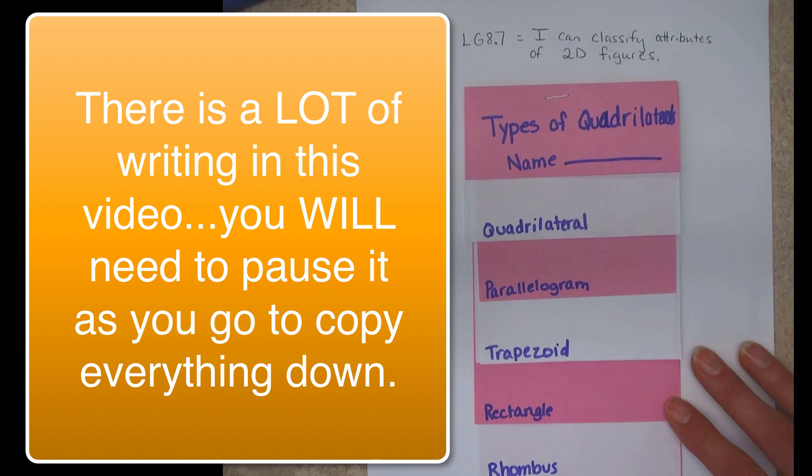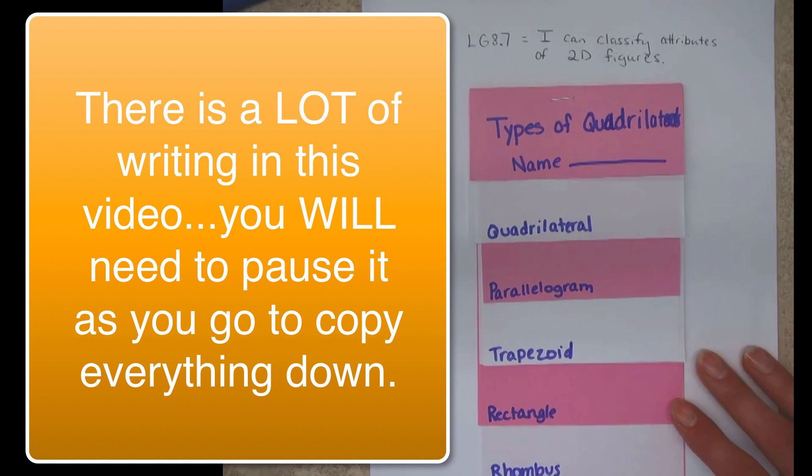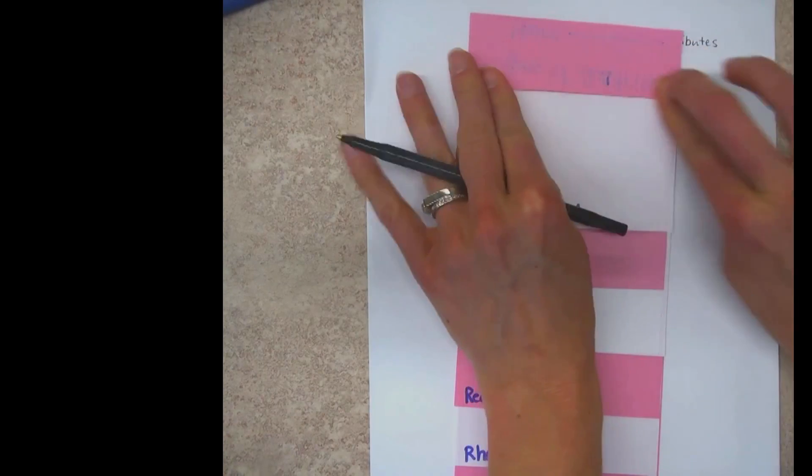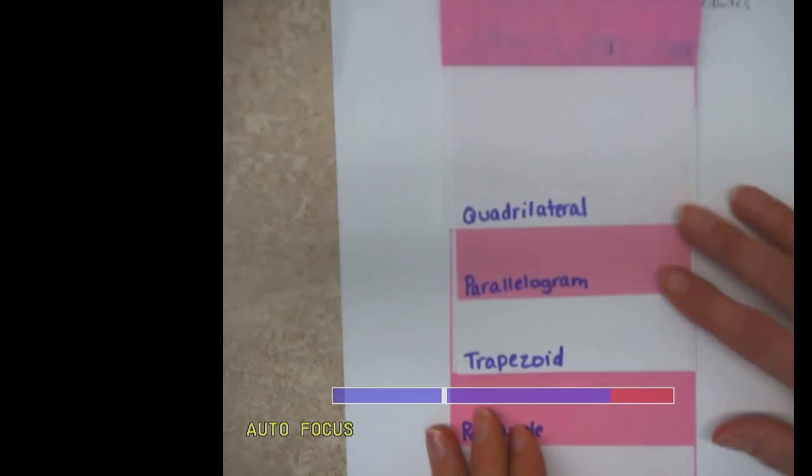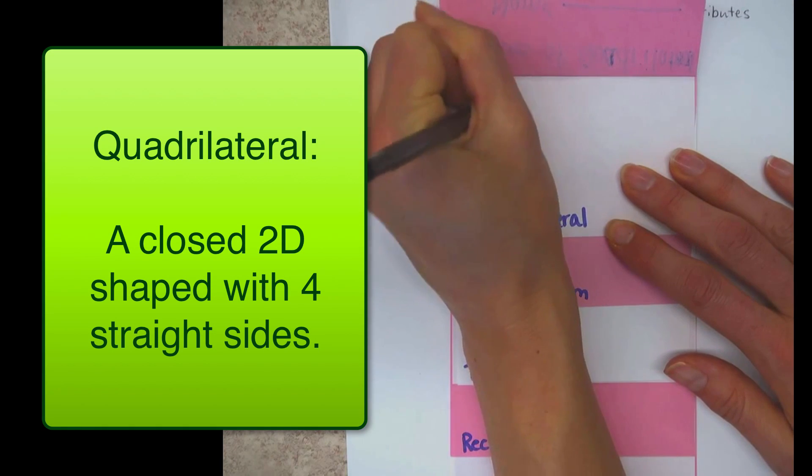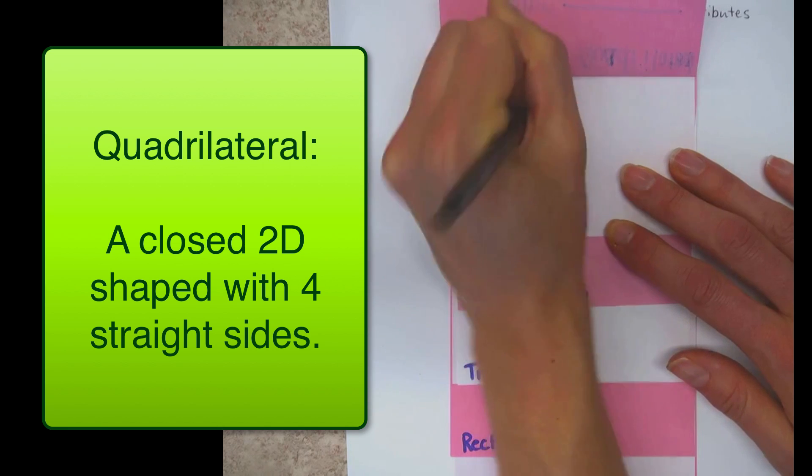A lot of vocab. So get ready. Here we go. The first one is a quadrilateral, and you're going to write it right where Mrs. Van Damme is writing hers. So a quadrilateral is a closed, 2D, two-dimensional shape with four straight sides.